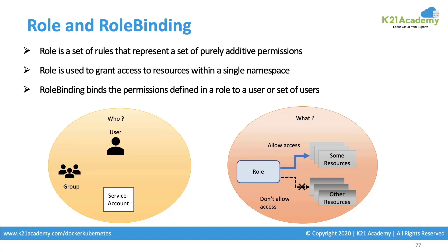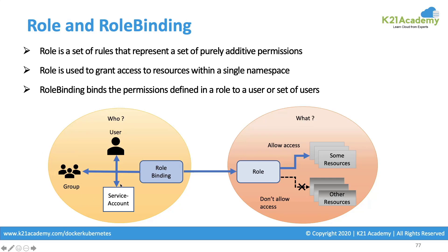Now the role is created and binding has to be done. I can say user one belongs to this role, or a group of users belongs to this role, or a service account belongs to this role. My subject can be one or all three of them binding to this role. As soon as I bind, the set of actions defined inside the role can be done by this user, group, or the resource tied to this service account — all on the namespace level.